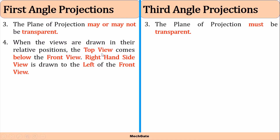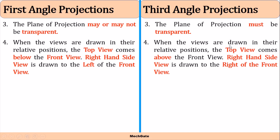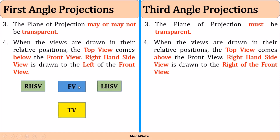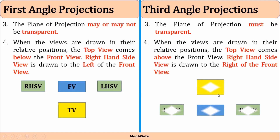When views are drawn in their relative positions in first angle projection, the top view comes below the front view, and the right-hand side view is drawn to the left of the front view. So in first angle projection, you draw the front view first, then the top view below it. The left-hand side view is drawn on the right side of the front view, and the right-hand side view is drawn on the left side of the front view. You have to remember these relative positions of the front view, top view, left-hand side view, and right-hand side view.